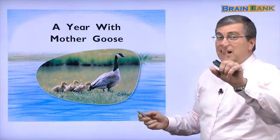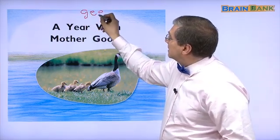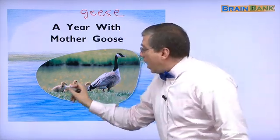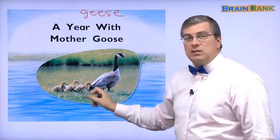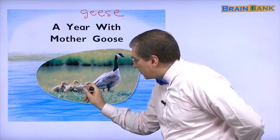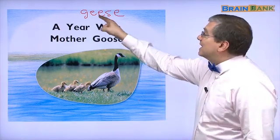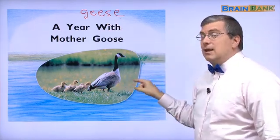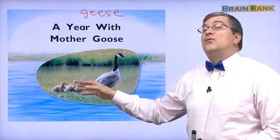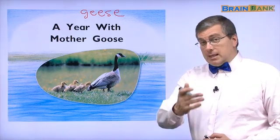By the way — goose: one goose, many geese. Geese, geese — many goose is one, right? How many geese do you see? We see one, two, three, four, five. There are five geese following mama goose. What are they doing? They are following mother goose.